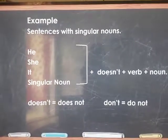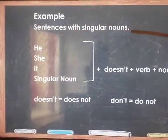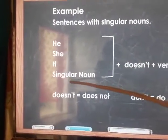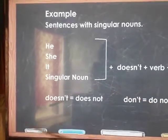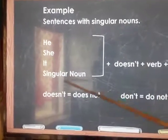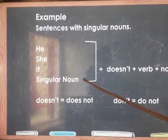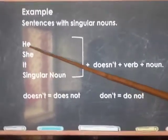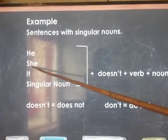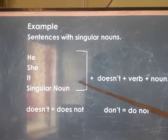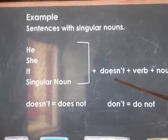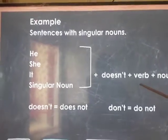Next are examples with singular nouns. Singular nouns are he, she, it, or only one person, place, thing, or animal — not more than one. For singular nouns, you use 'doesn't.' For example: 'He doesn't... She doesn't... It doesn't... A singular noun like a name — for example, 'Sport doesn't' — you add the verb after 'doesn't.'